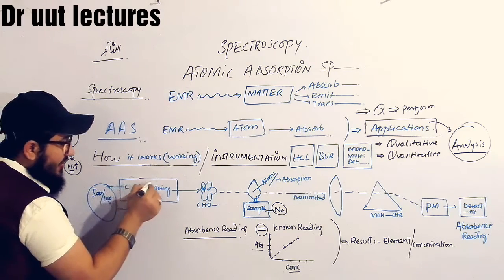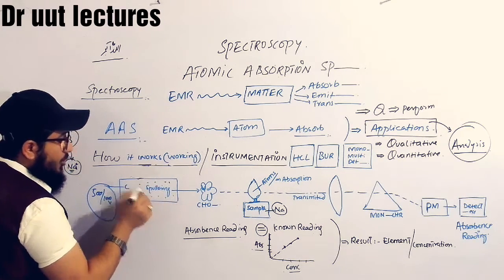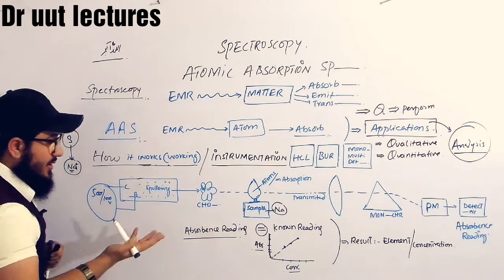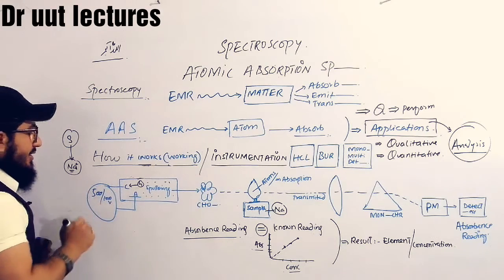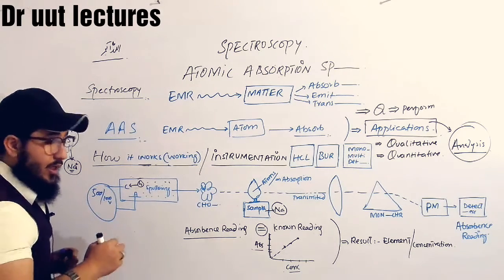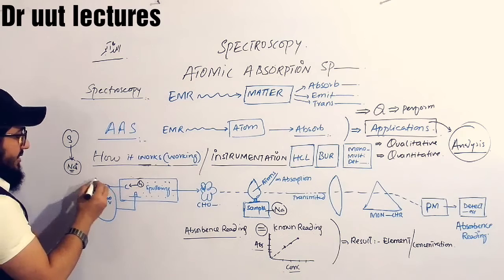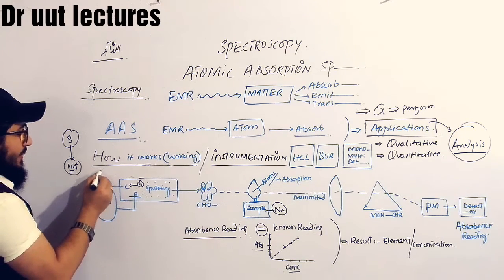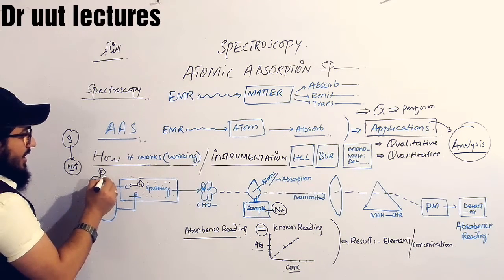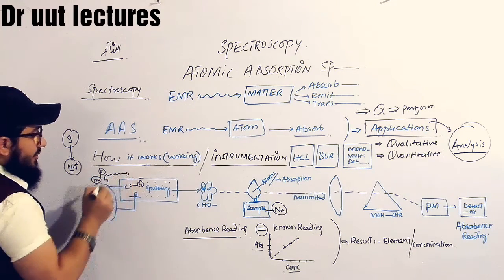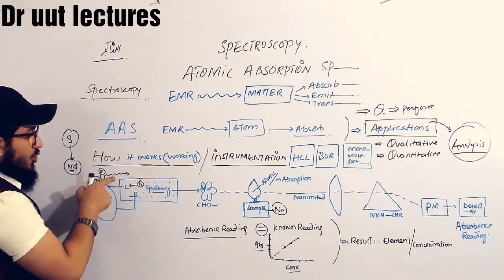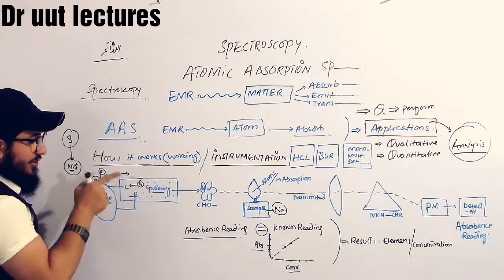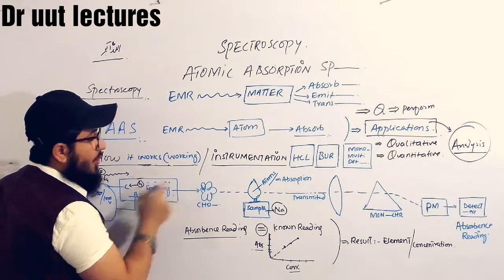The gas filled in the hollow cathode lamp will become ionized, and this ionized gas will then target the cathode. After targeting the cathode, the cathode — which is made of sodium — will become excited. After excitation, it will come back toward the ground state, and in the meanwhile it will emit radiation. This mechanism is known as sputtering. Electromagnetic radiations are generated and then these radiations move towards the chopper, which breaks the electromagnetic radiation into pieces — these pieces are known as photons.